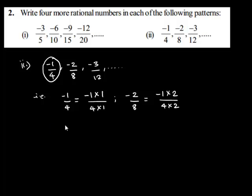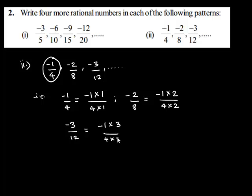And similarly, the next term, which is negative 3 upon 12, can be written as negative 1 multiplied by 3 upon 4 multiplied by 3.